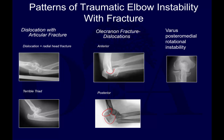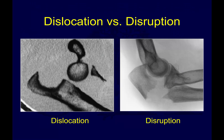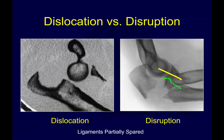Another injury pattern is varus posteromedial rotational instability, where certain coronoid fracture types can render the elbow unstable in the opposite direction. The terminology of disruption versus dislocation is important when thinking about ligament repair and reconstruction, since these situations differ. In proximal ulna fractures, you don't necessarily have complete ligament injury — the ligaments may in fact be partially spared.